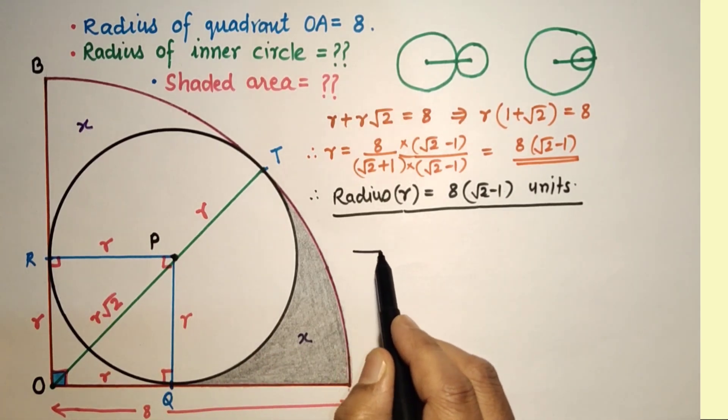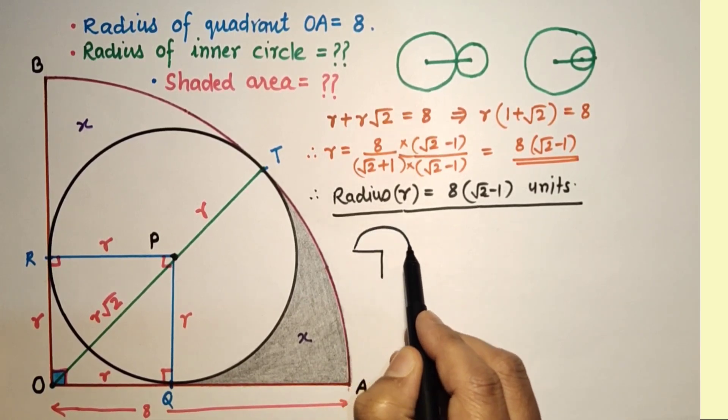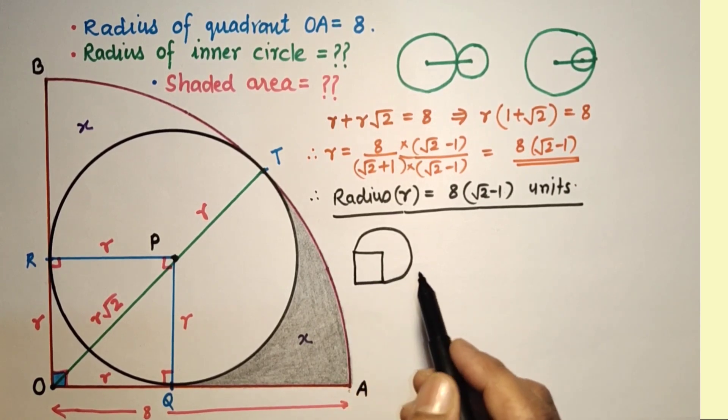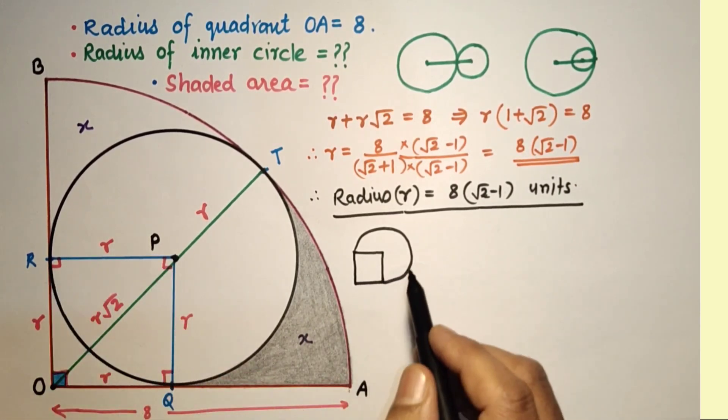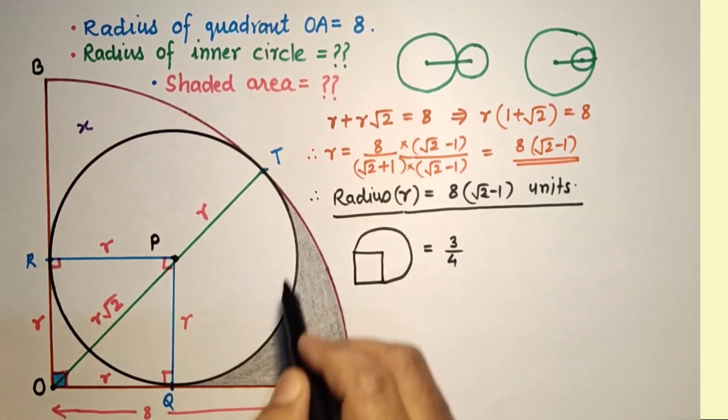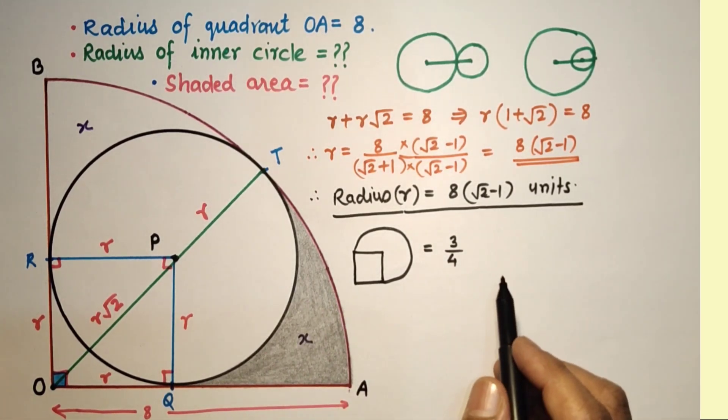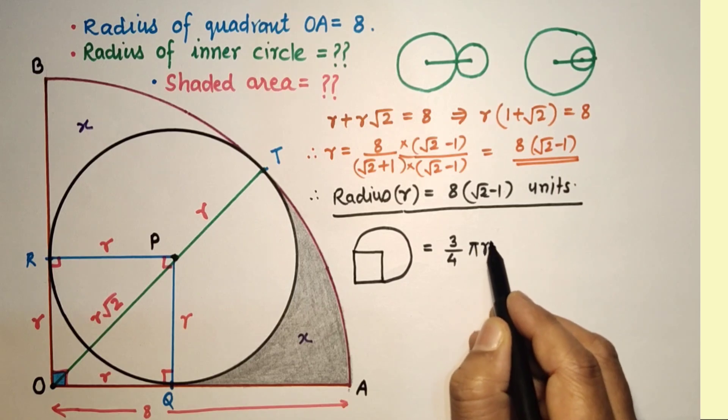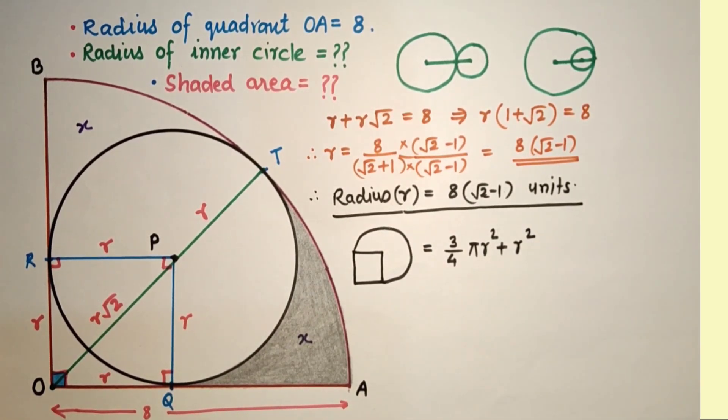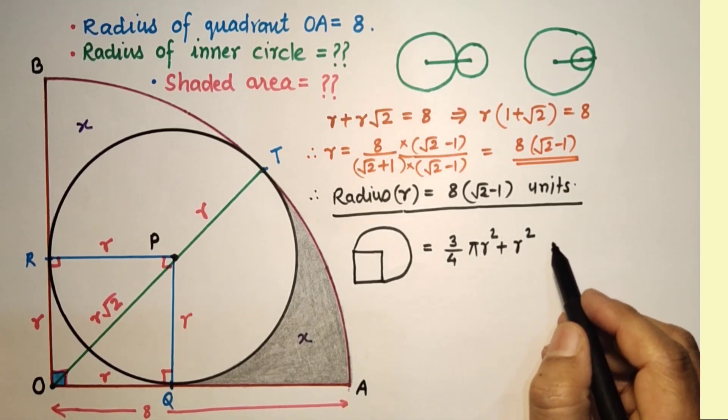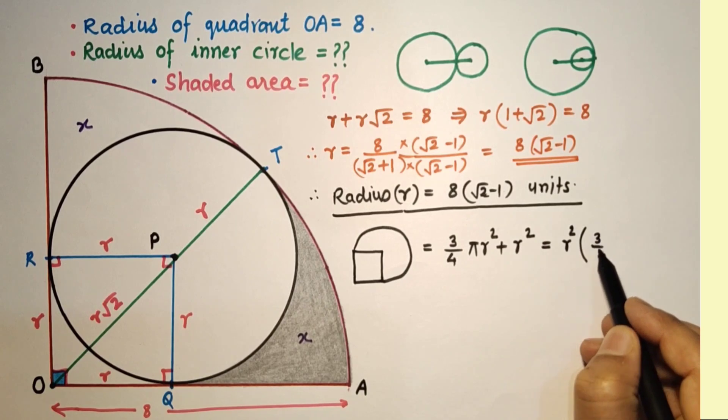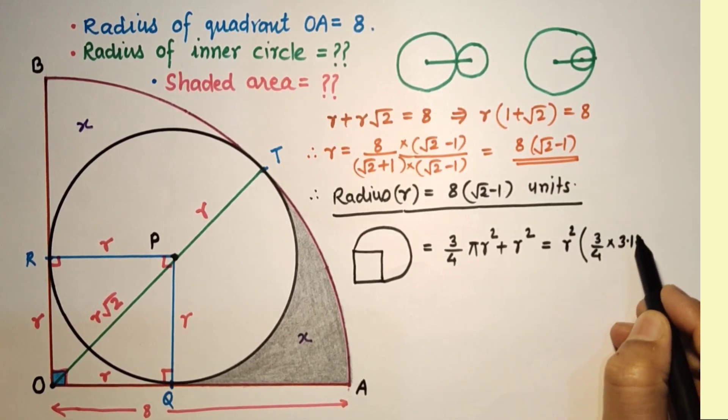So this area plus this square area, that would be 3/4 of the circle, πR², plus this square area is R². So that is R² common: 3/4 π, that's 3.14, plus 1.